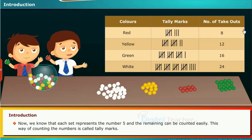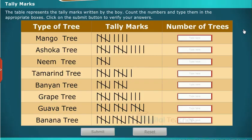This way of counting the numbers is called tally marks. The table represents the tally marks written by the boy. Count the number and type them in the appropriate boxes. Click on the submit button to verify your answers.